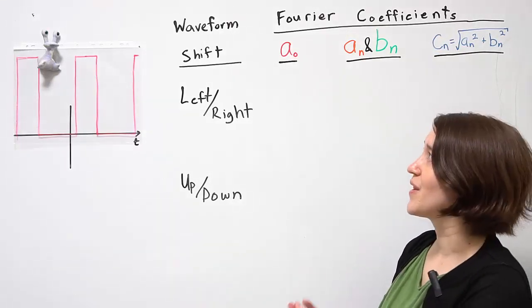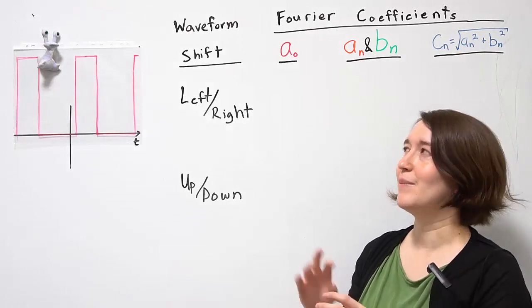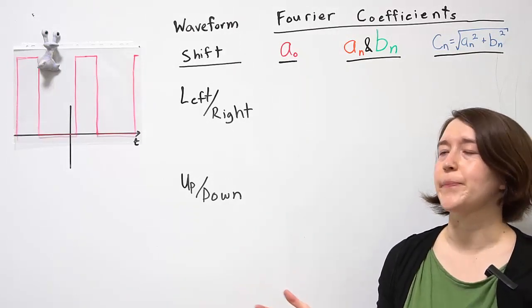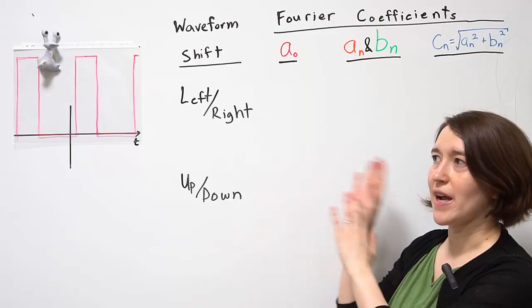If we go through and calculate all of these coefficients, it would take a lot of calculation. We can shift the waveform to actually make these calculations a little bit simpler, but we have to see how they affect the coefficients.